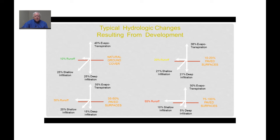Runoff generally increases from the natural condition where runoff might represent only 10% of the precipitation which falls on the site, moving upward as you increase the percentage of paved surfaces, increasing to as much as 55 or 60% or more of the precipitation volume under a completely developed parcel. Estimation of runoff is important for determining the impacts from development.